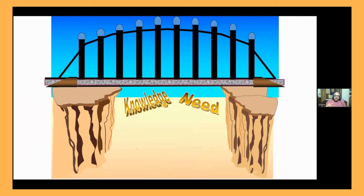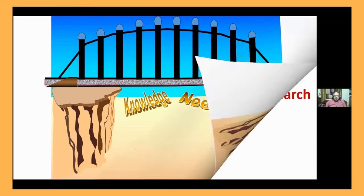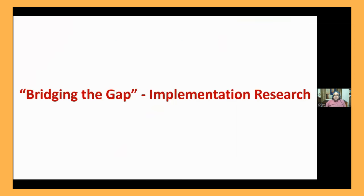Implementation research has evolved over a period of time. Earlier it was called translational research, dissemination research, etc. Currently, the term everybody favors is implementation research — the bridge between knowledge and need. What implementation research does is bridging that gap.